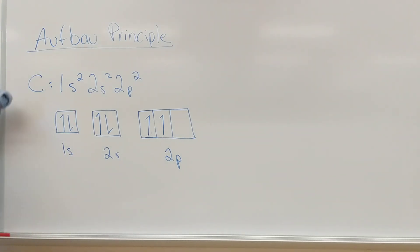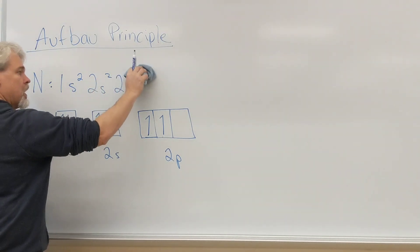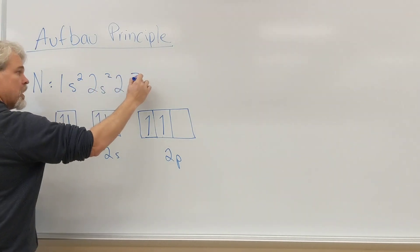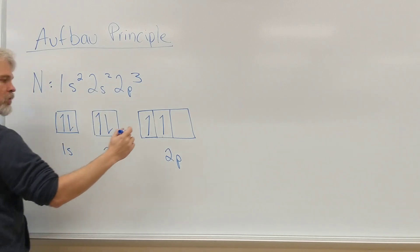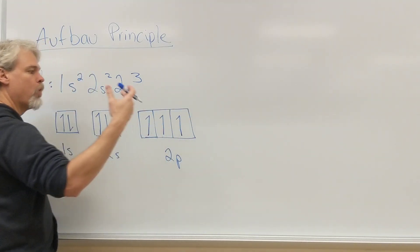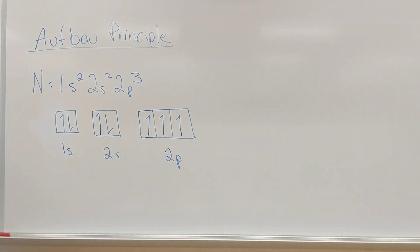Okay, so next after carbon comes nitrogen. Nitrogen would be 1s2, 2s2, 2p3 and we would add the third electron unpaired in the remaining available orbital. So now we've got a single electron in each one of our orbital boxes. So the next element would be O.